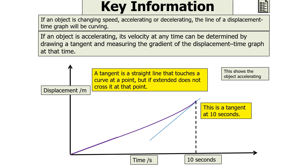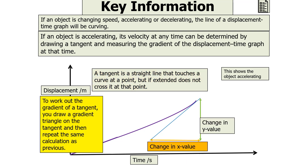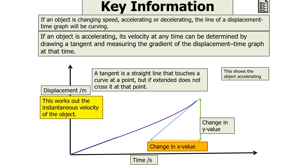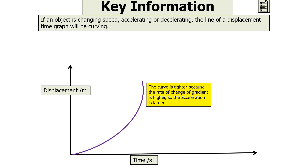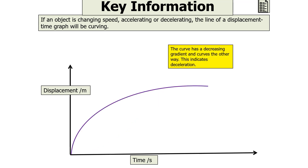This graph, which shows the object accelerating, has a tangent drawn at 10 seconds. To work out the gradient of a tangent, you draw a gradient triangle on the tangent and then repeat the same calculation as before. Note that this method works out the instantaneous velocity of the object — the velocity at that point in the journey. The tighter the curve, the higher the rate of change of gradient, so the acceleration will be larger. A curve with a decreasing gradient curving the other way indicates that the object is decelerating.